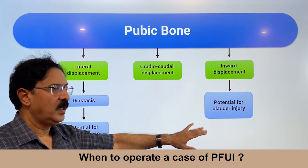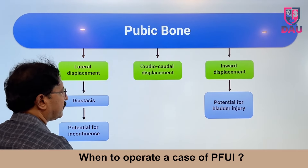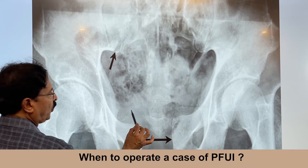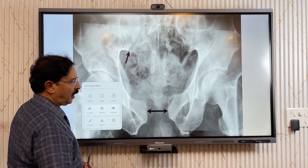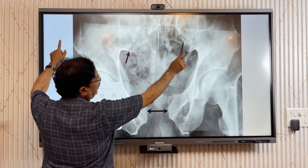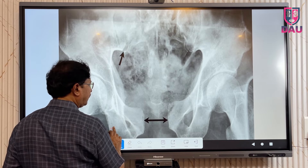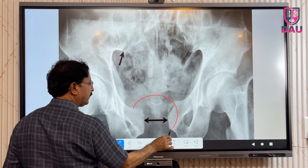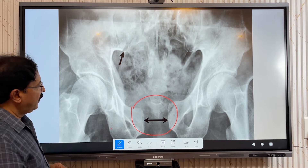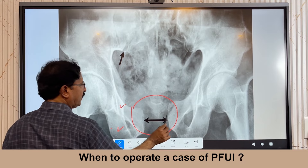By looking at the pubic bone displacement and bony fragments you can infer co-associated underlying injury to the urethra and urinary bladder. Here is a plain film — I want you to have a scheme in your mind when looking at it. First, concentrate on the centermost part of the film, which is the pubic symphysis.